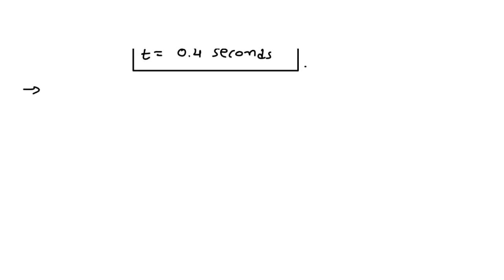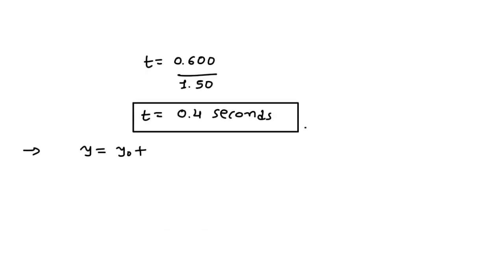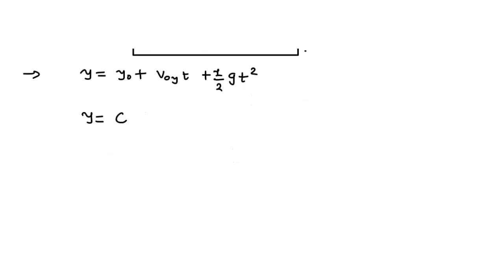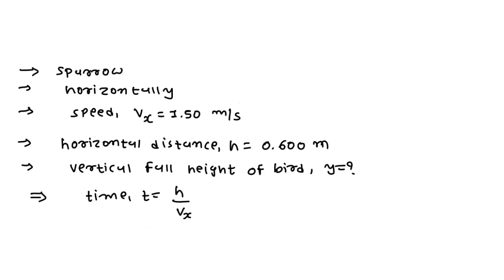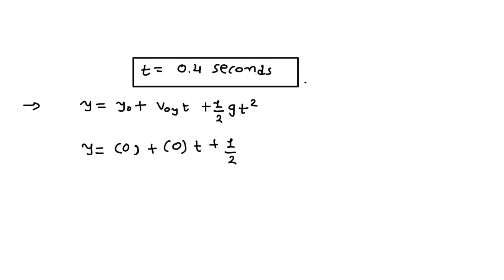Now we find the vertical fall height y using the kinematic equation: y equals y-naught plus v-naught-y times t plus one-half times g times t squared. The initial vertical velocity v-naught-y is 0, so we substitute: y equals 0 plus 0 times t plus one-half times 9.8 times (0.4) squared.